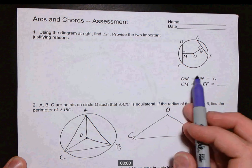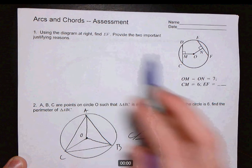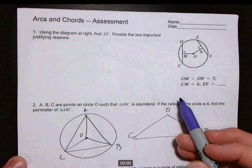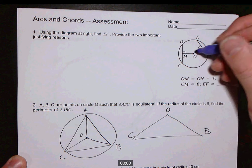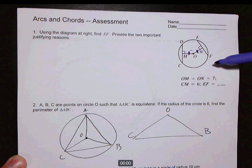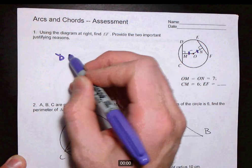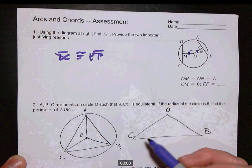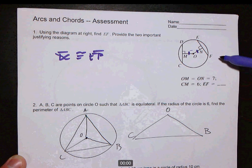In number one, we're asked to find EF, and there are really two key things I wanted you to think about. First, because OM and ON are congruent, that means that these two chords, DC and EF, are equidistant from the center, and we know that equidistant chords from the center in a circle are congruent. So we know that DC is congruent to EF.